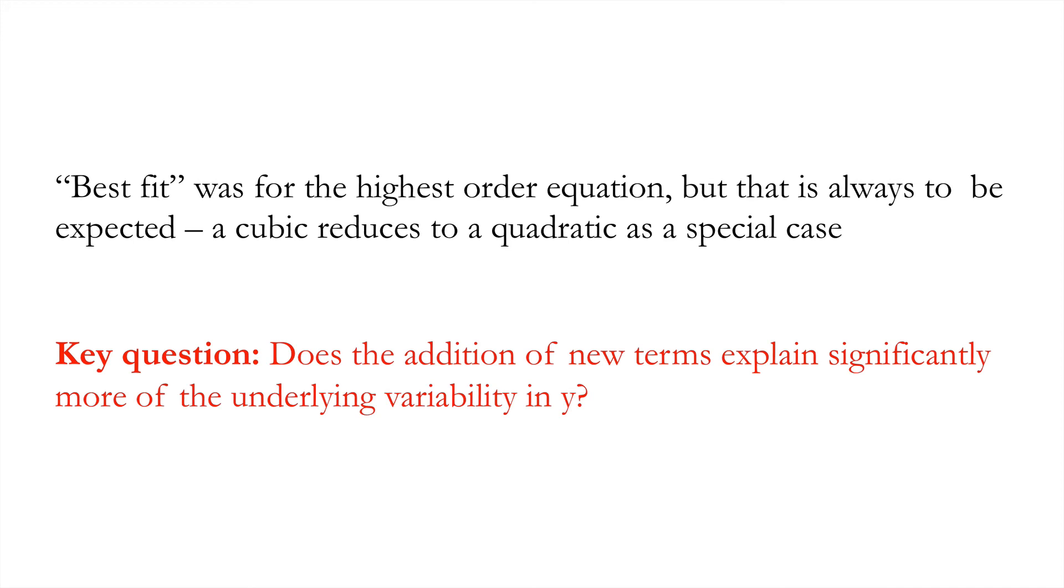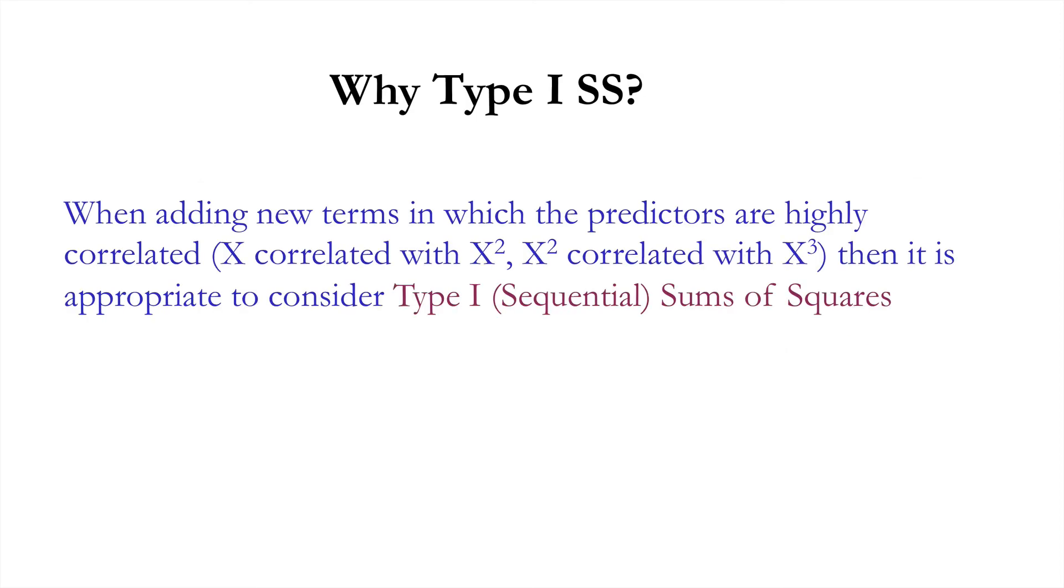Here is the key question that we should be asking. Does the addition of new terms explain significantly more of the underlying variability in y? To ask this type of question, we need a type 1 sum of squares. So, when adding new terms in which the predictors are highly correlated, then clearly it is appropriate to consider type 1 sequential sums of squares, because through that collinearity they might otherwise mask one another's effects.